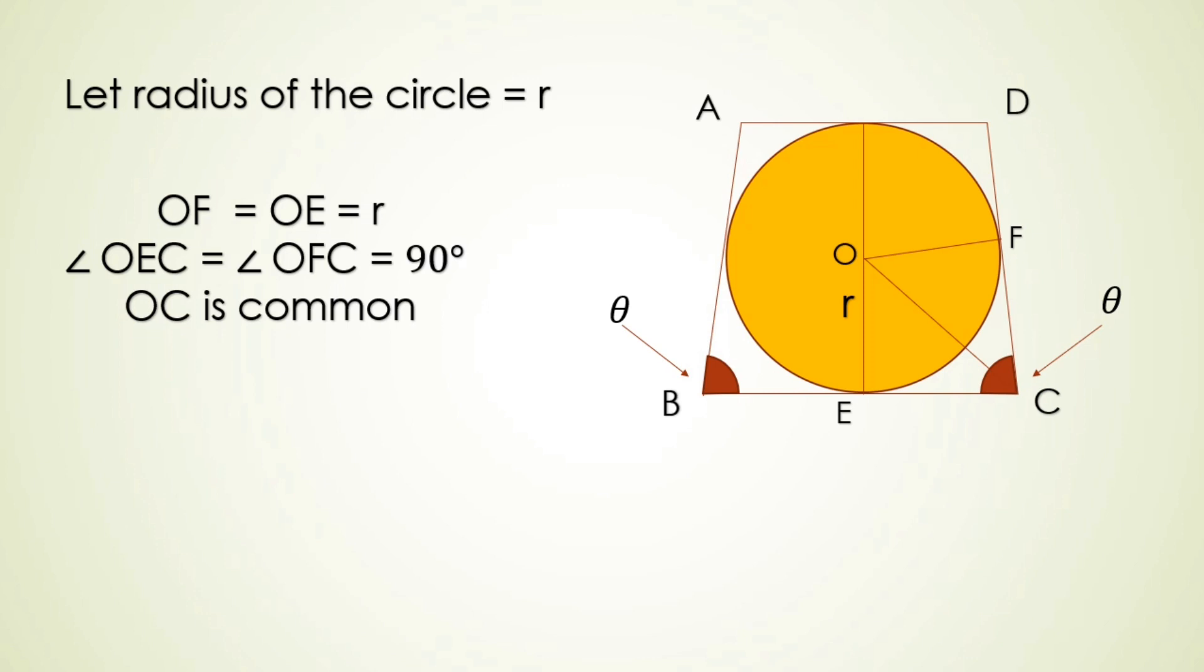Because OF is the radius and DC is a tangent and tangent is always perpendicular to the radii. Hence both the angles are equal to 90 degree.